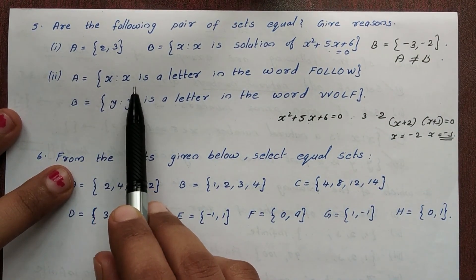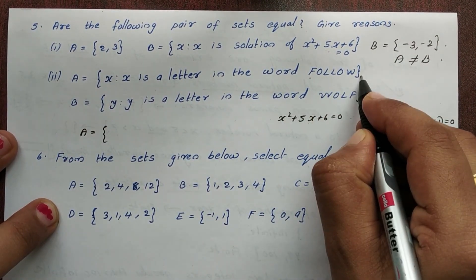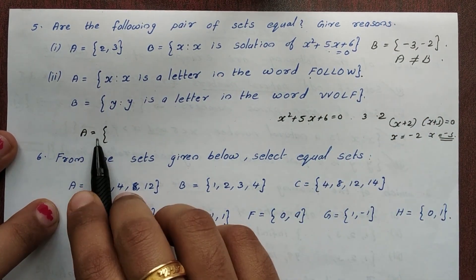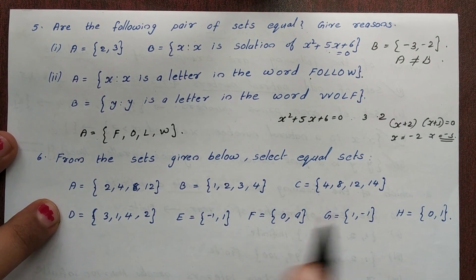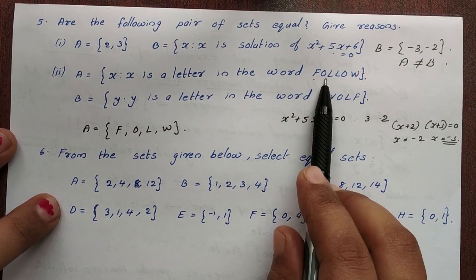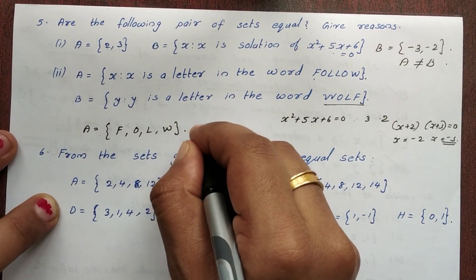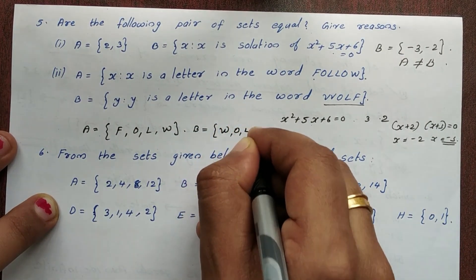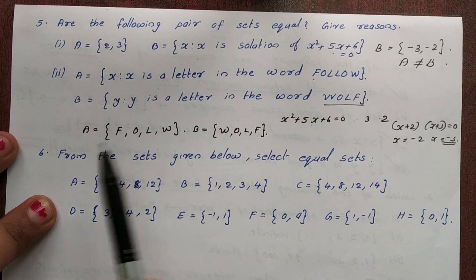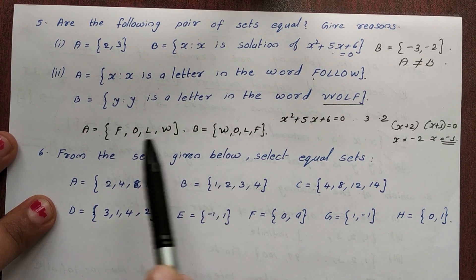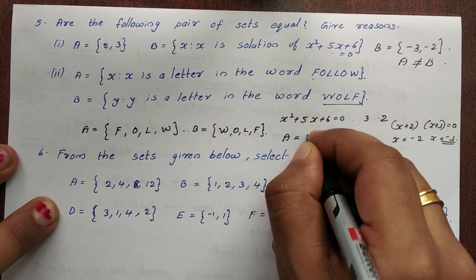A = {x : x is a letter in the word 'follow'} and we find the unique letters in 'follow'. So A is equal to B.